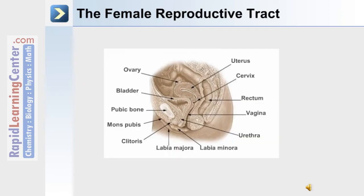This slide depicts the female reproductive tract in a sagittal view. The ovary is the site of egg production. At the entrance to the uterus is the cervix. Also in this region is the rectum, bladder, and pubic bone.